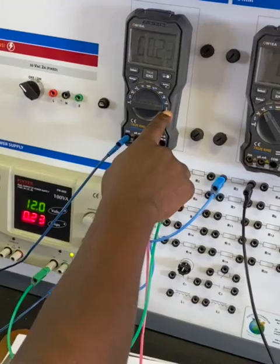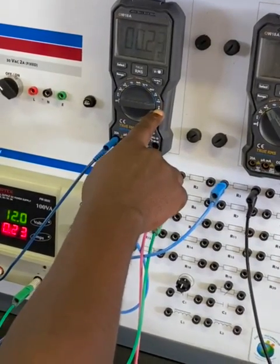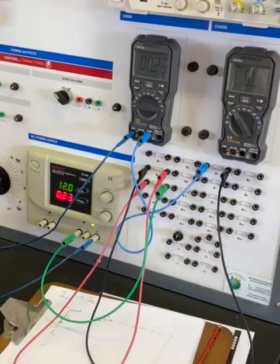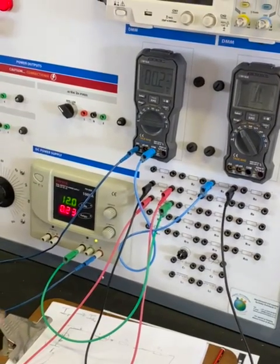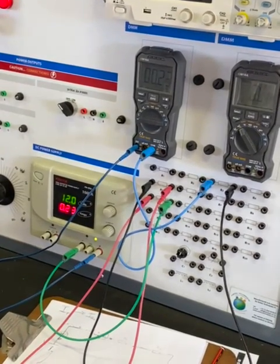We are on the full scale because we're using the maximum current flowing from the supply. And that is how to measure the total current.